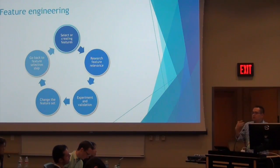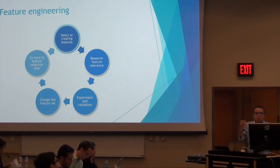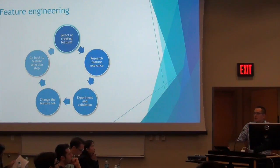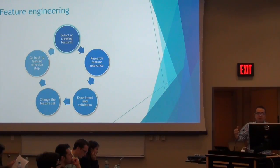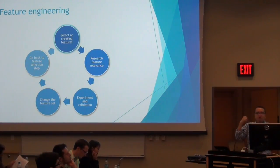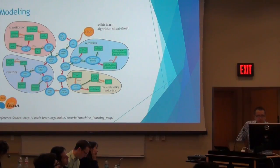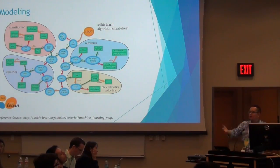The next step is feature engineering. A lot of data scientists spend a lot of time on feature engineering. We use brainstorming on our team to figure out the features we can use. We also use some algorithms to generate features automatically. Whatever approach you use, you get an initial dataset for the features. Then you research the features, do some tests, try different algorithms in the modeling, and change the test set. This is a cycle — we do a lot of work to test, validate, and create new features while discarding others. It takes a while.